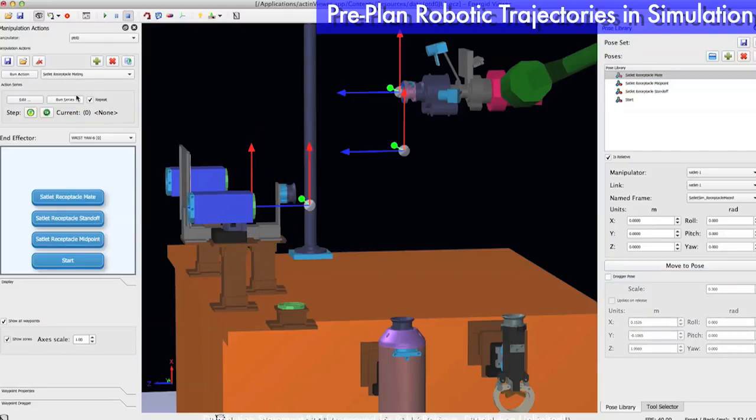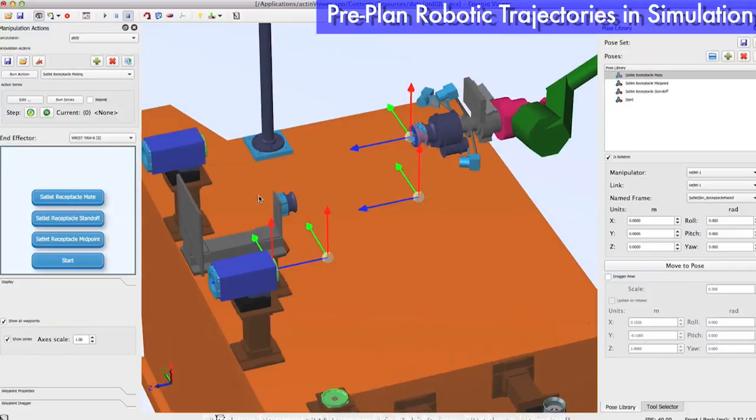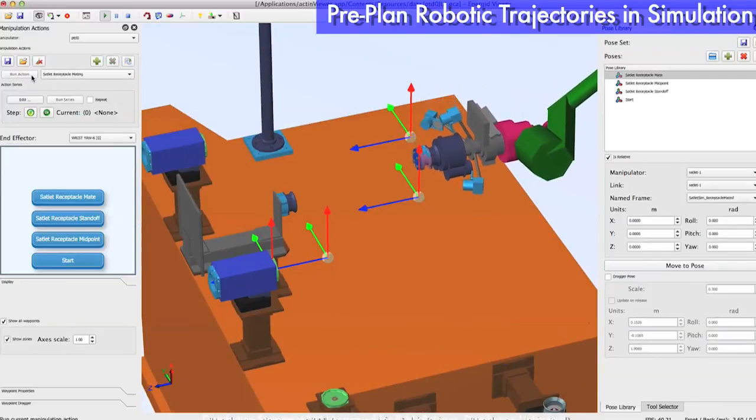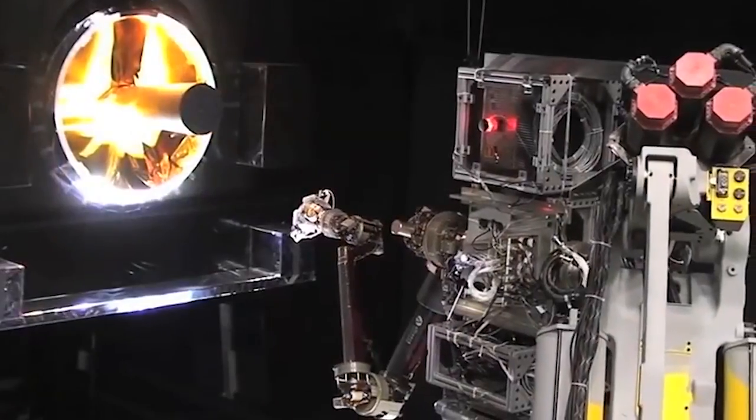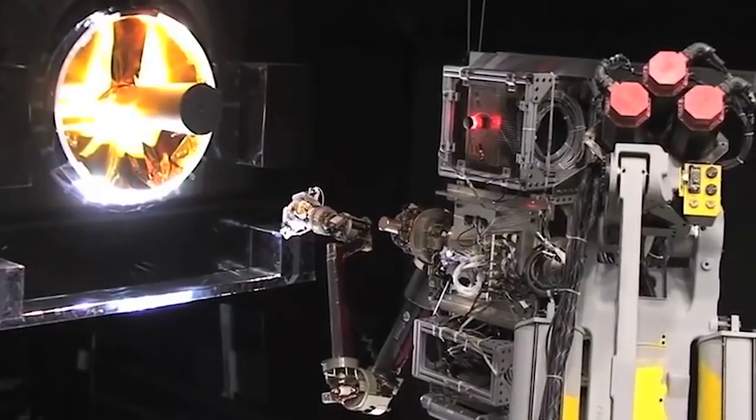Because the communication delay is too long for humans to operate it fully by remote control, the robot will use a mix of human and autonomous operation to perform tasks.